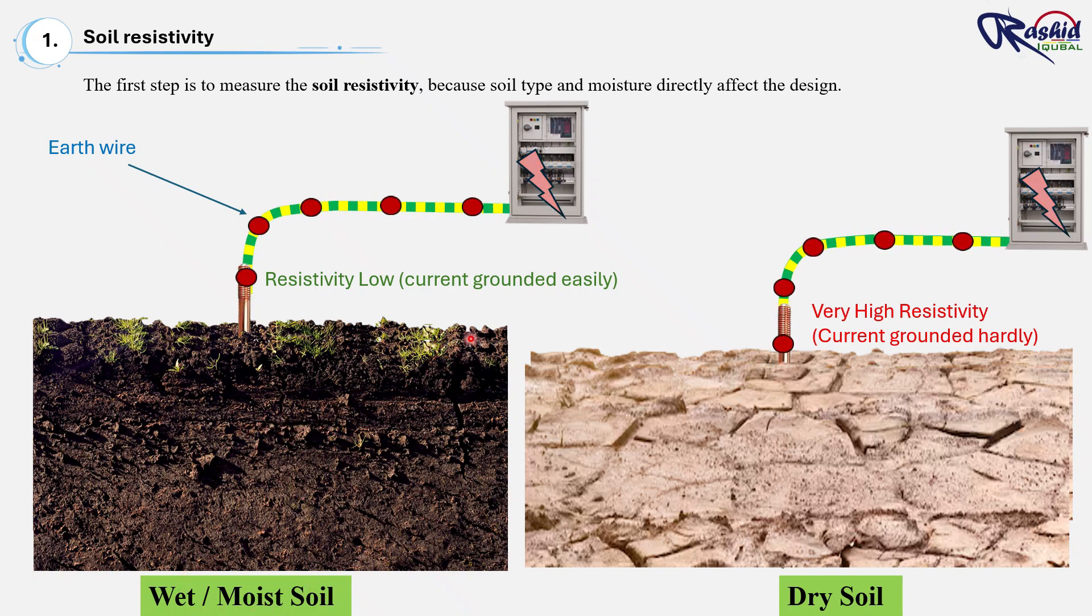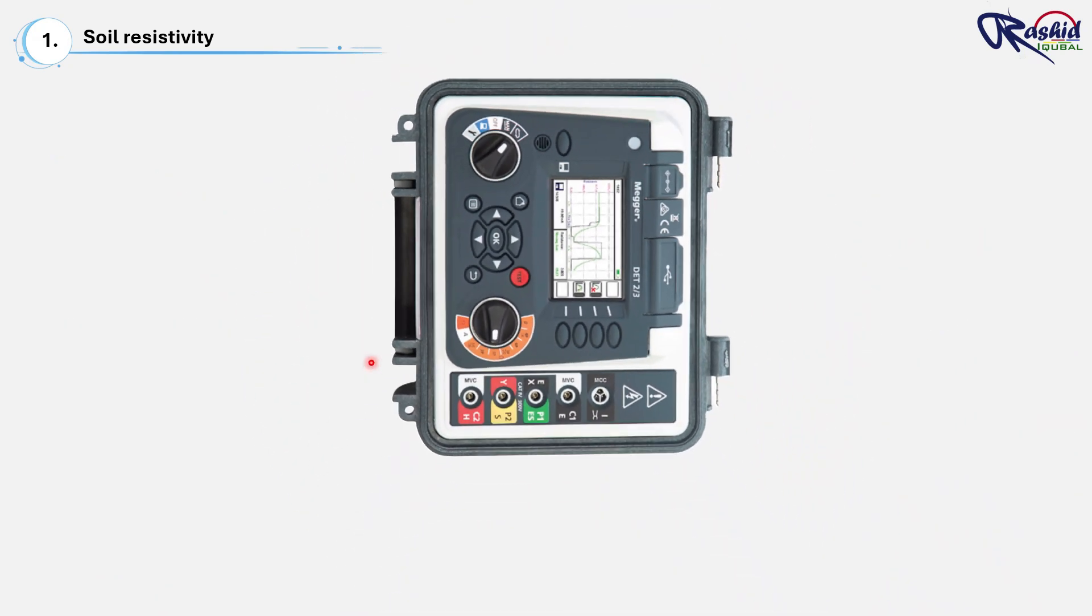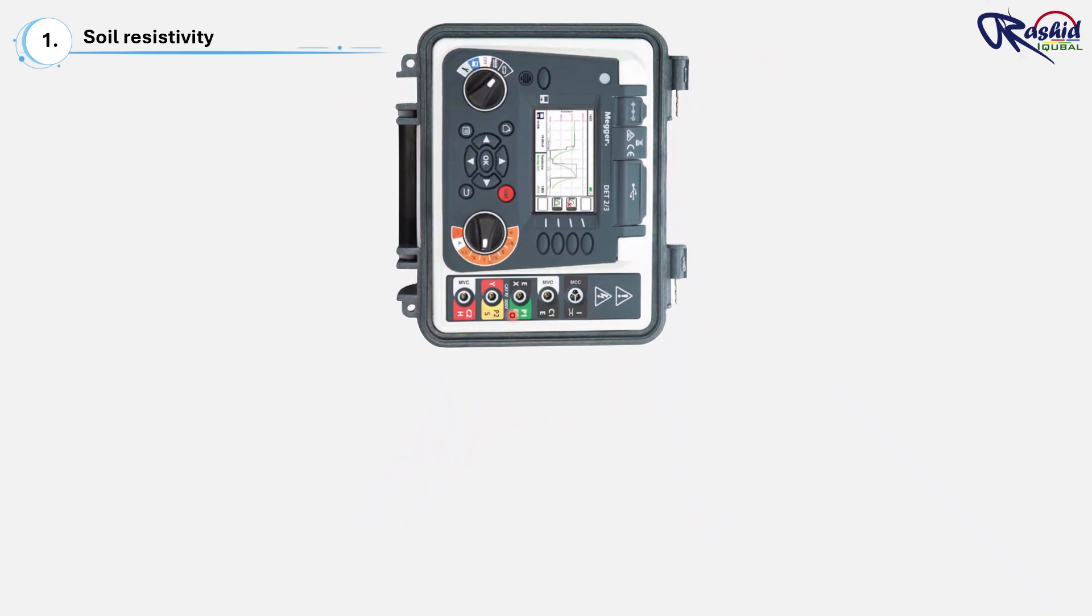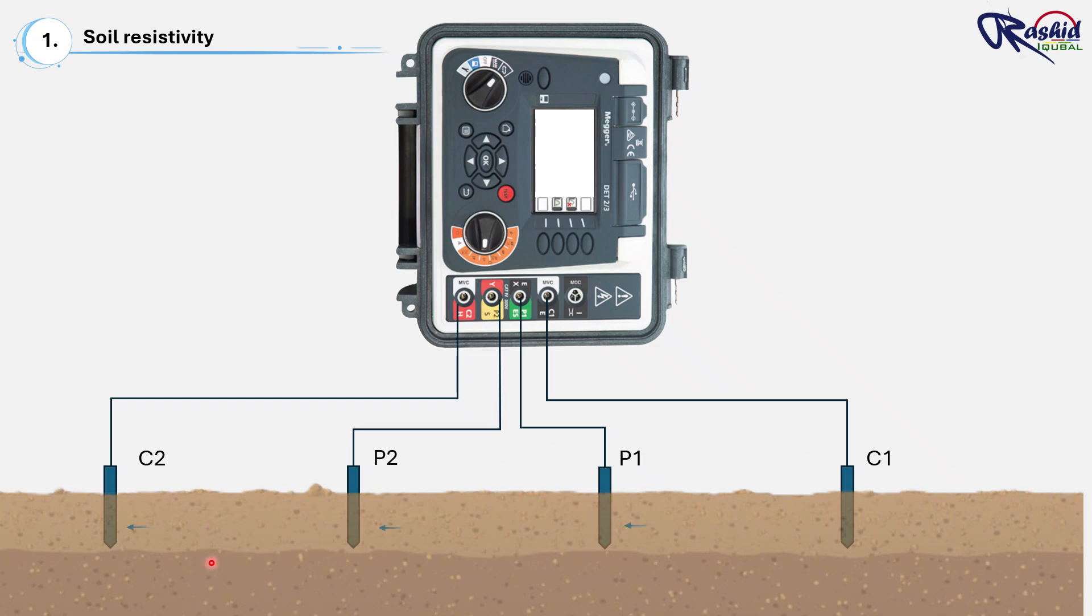To find out the actual soil condition and resistivity, we use a standard method called Wenner four-point test. In this method, an earth resistivity meter is used to perform tests. Drive four small test probes into the soil along a straight line and maintain equal spacing. Inject current between the outer two probes, that is C1 and C2, as you can see here.